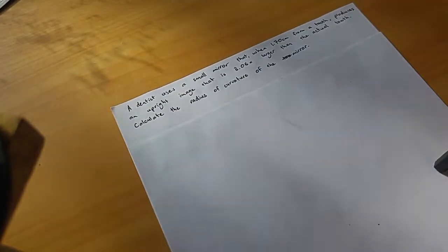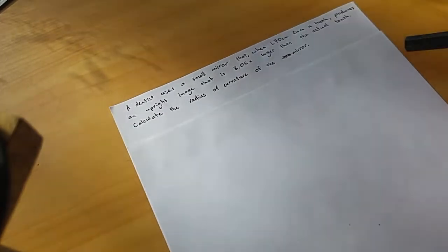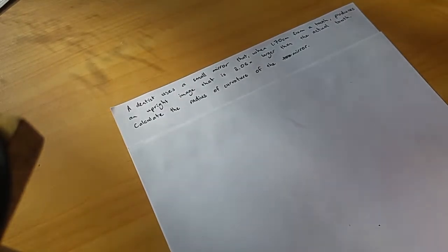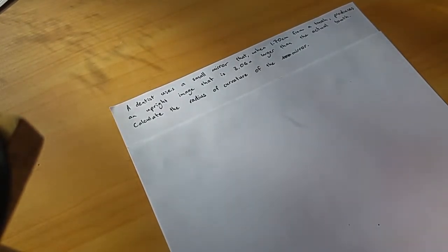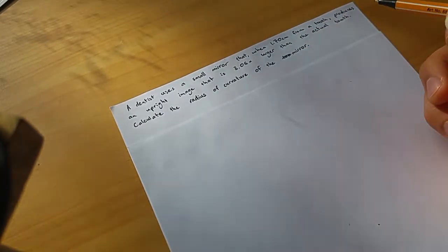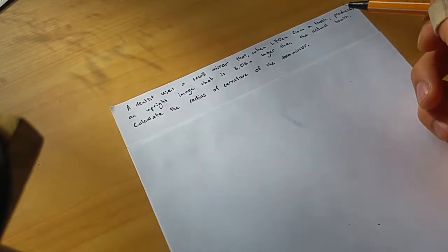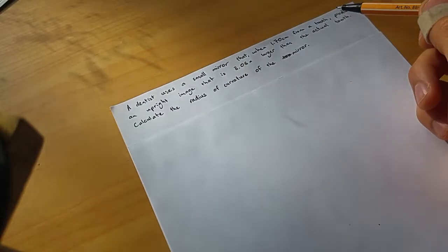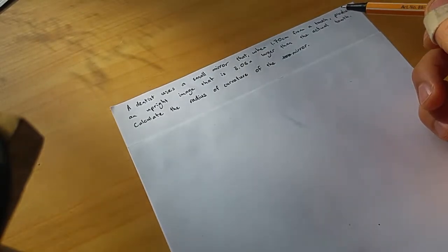All right, we have a new question here from one of my physics students. This one's going to be a bit tough and we're going to go on a bit of a journey with our equations. So a dentist uses a small mirror that when 1.70 centimeters from a tooth produces an upright image that is 3.06 times larger than the actual tooth. Calculate the radius of curvature of the mirror.